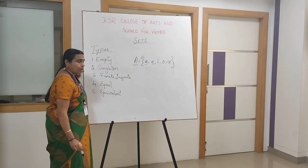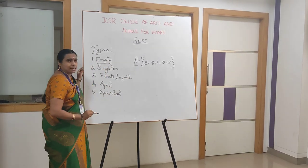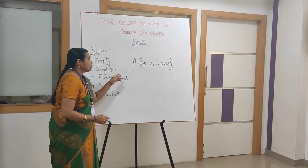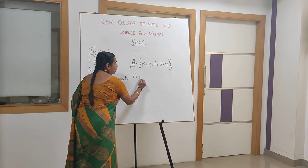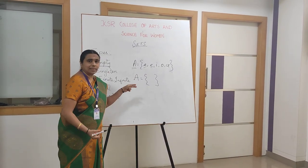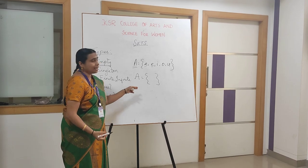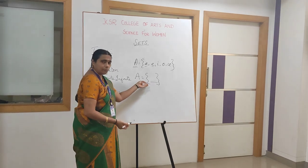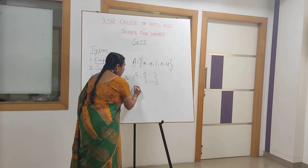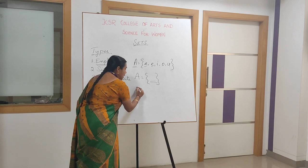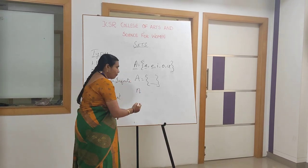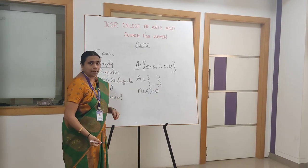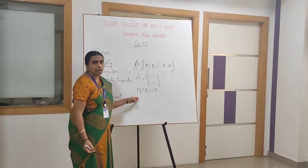Next, types. First, empty set. Empty set — we know the meaning. It has no elements. So, set bracket with no element is an empty set. Here the number of elements — that is cardinality — N is nothing but 0.